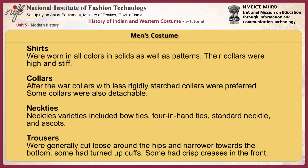Shirts were worn in all colours, in solids as well as patterns. Their collars were high and stiff. After the war, collars with less rigidly starched styles were preferred, and some collars were also detachable. Necktie varieties included bow ties, fore-and-hand ties, standard neckties, and ascots. Trousers were generally cut loose around the hips and narrowed towards the bottom.